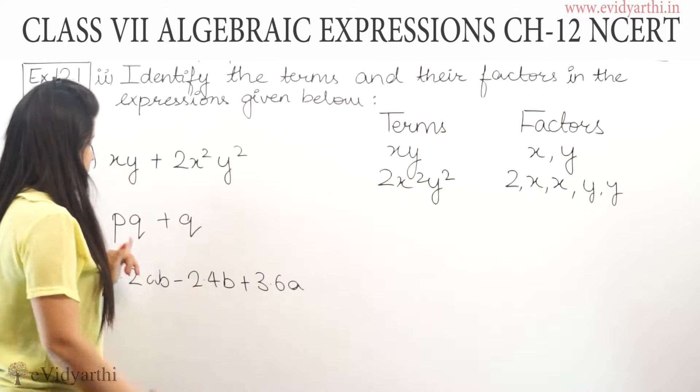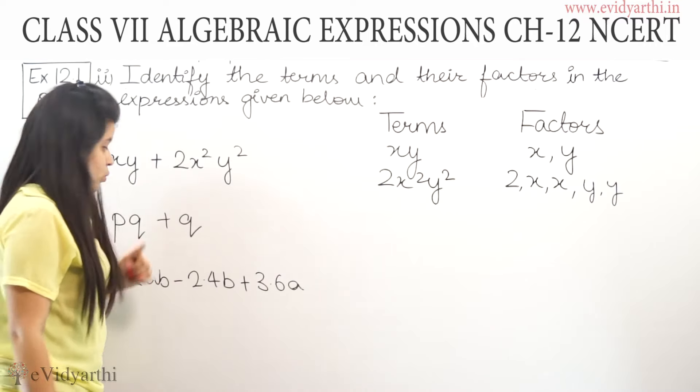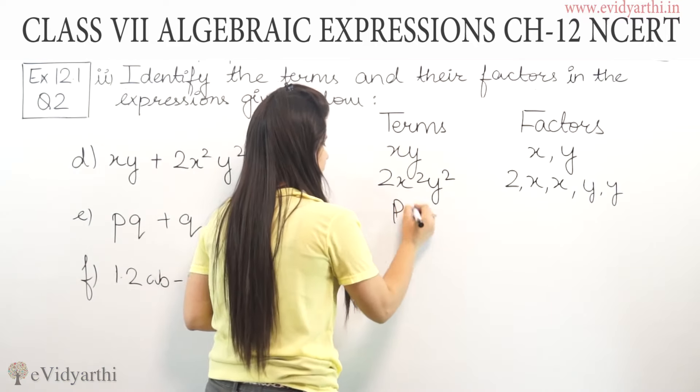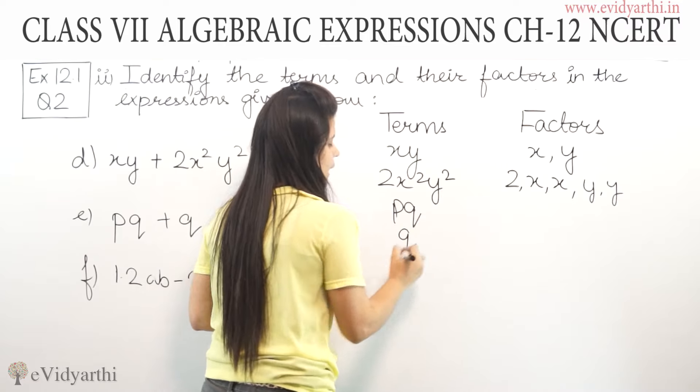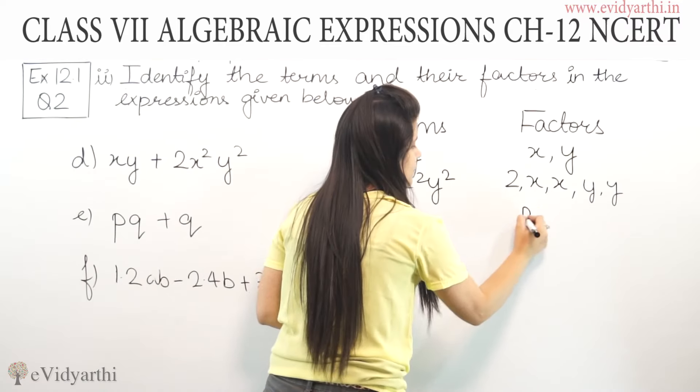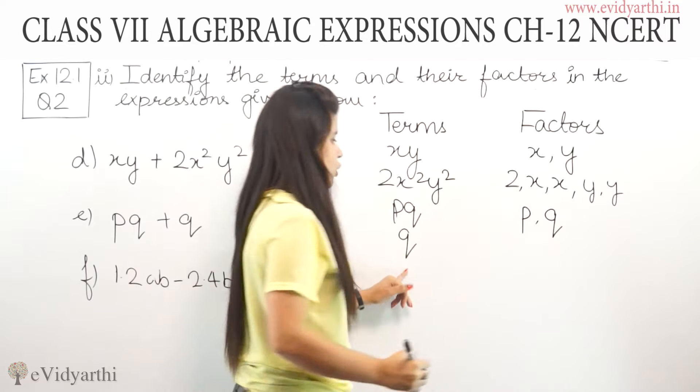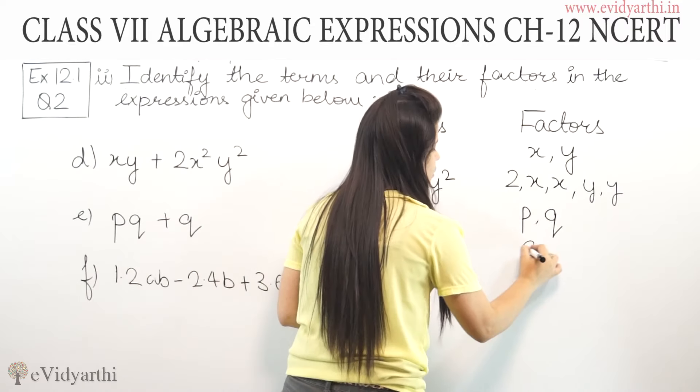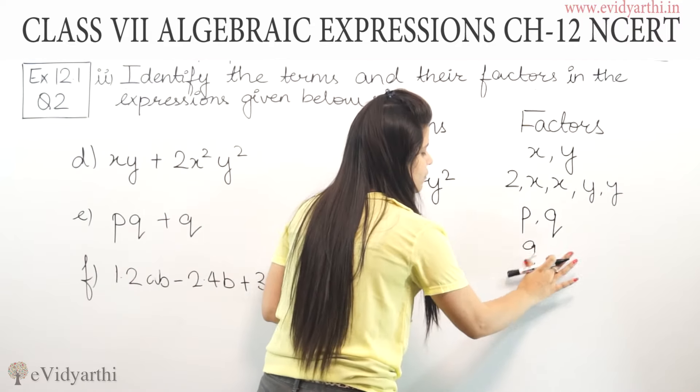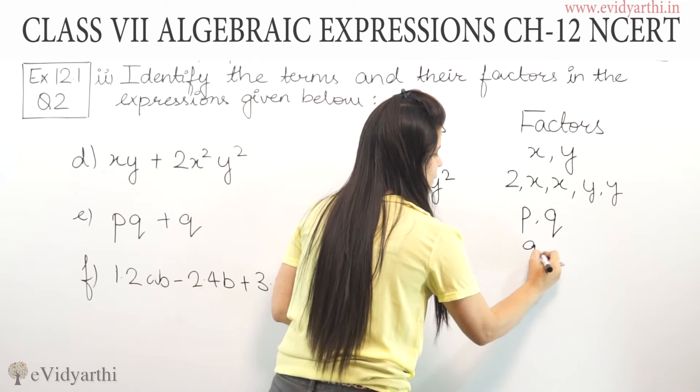Now, for part e, we have pq + q. One term is pq, and the other is q. The factors of pq are p and q. For q, we can write q × 1, or just q.